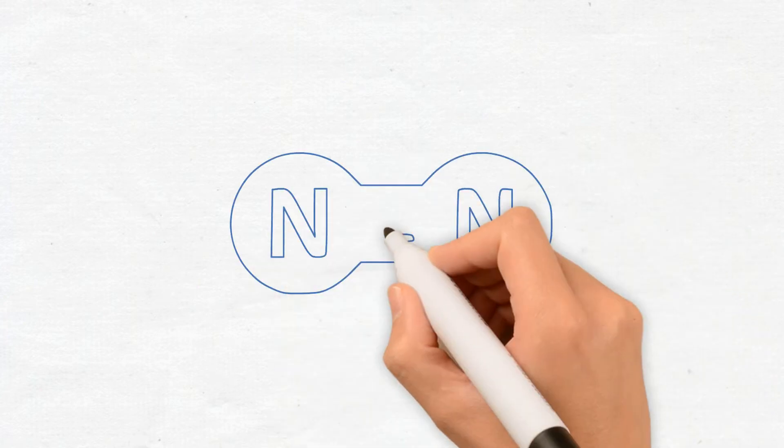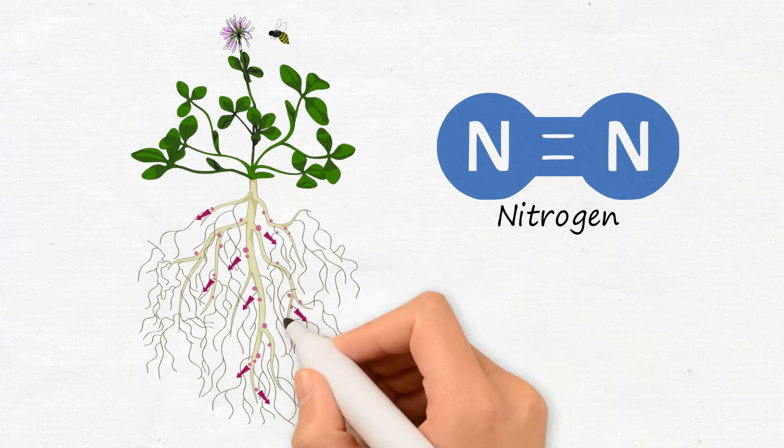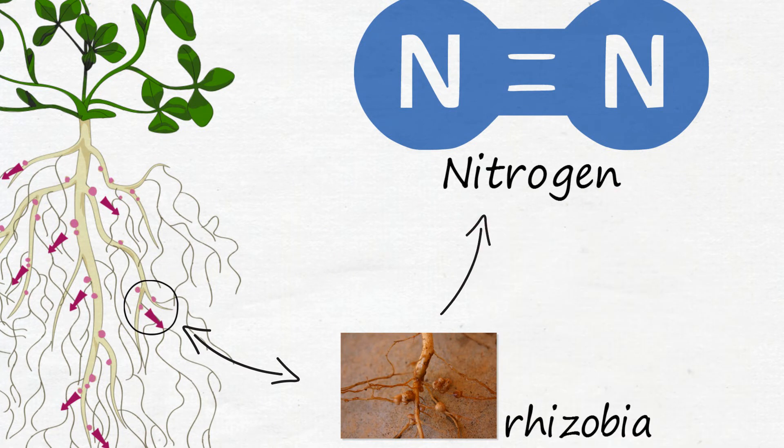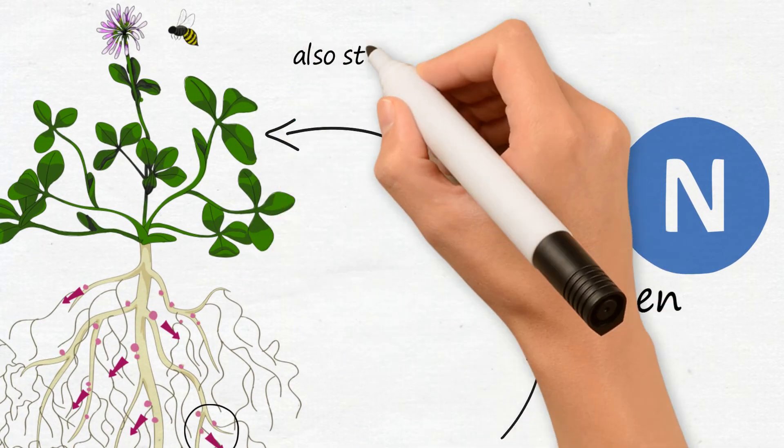Fixation is also very effective at creating nitrogen. Nodules on the taproot interact synergistically with the special rhizobia contained in the seed coating to fix nitrogen from the air. This nitrogen is also stored in the plant's tissues.